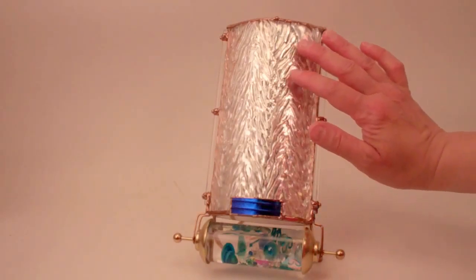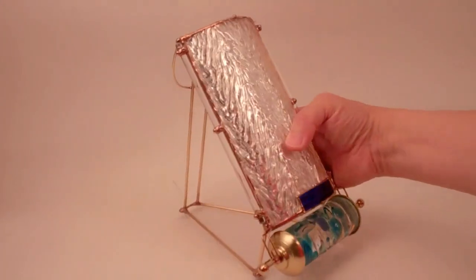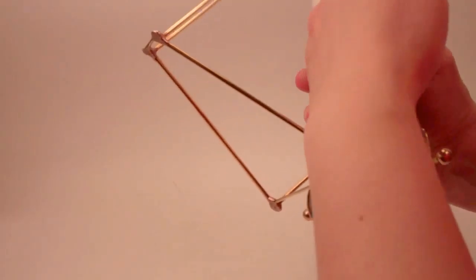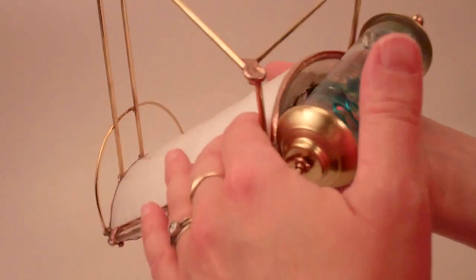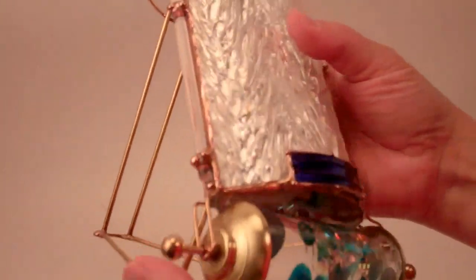The exterior of this kaleidoscope, which is named Orbit, features this beautiful new design that Sue has created with slumped glass panels. So the glass panel has this beautiful curve to the exterior of the barrel.